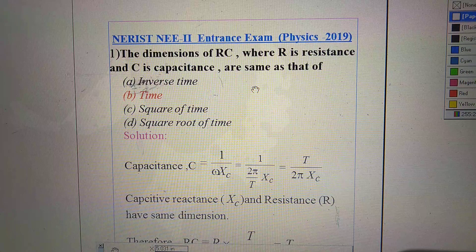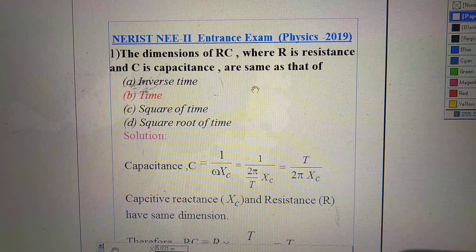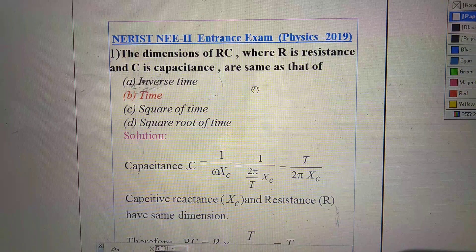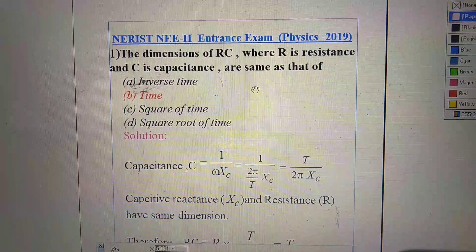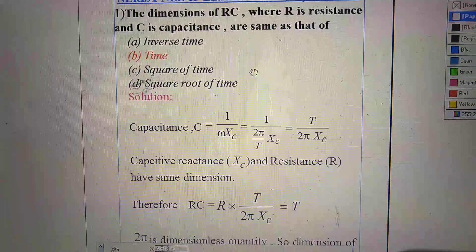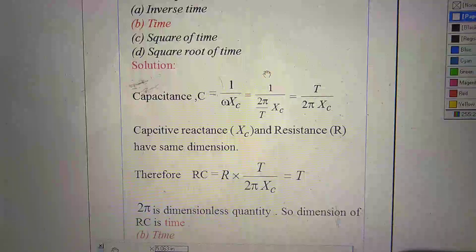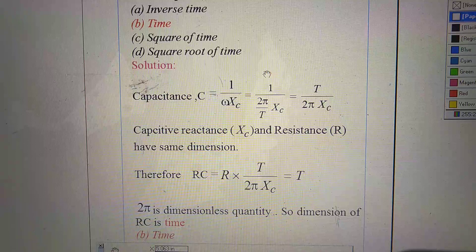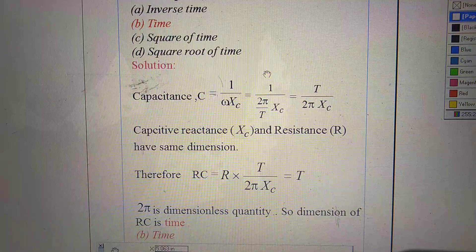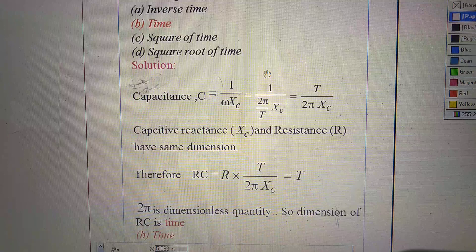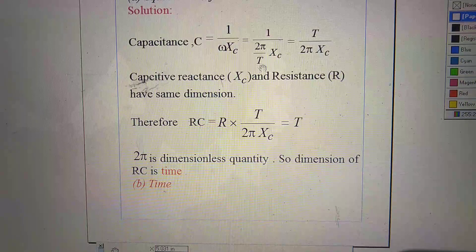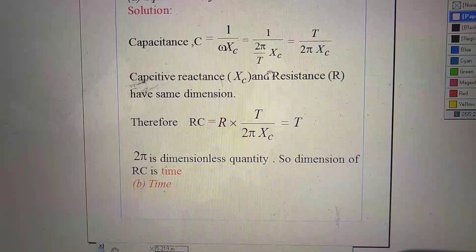So how can I solve this one? See, we know capacitance C equal to 1 by omega XC. After calculation, we find out C equal to T by 2 pi XC. Capacitive reactance XC and resistance R have same dimension. Therefore, RC equal to T. We drop 2 pi because 2 pi is dimensionless quantity. So dimension of RC is time. That is B. Option B is the right answer.